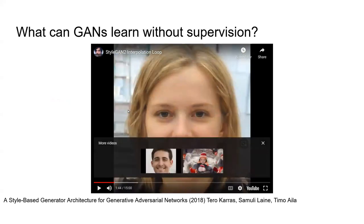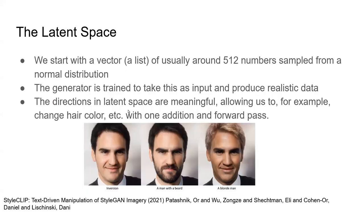You might have 512 numbers in a vector sampled from a normal distribution. You pick a point and make a face from it, pick another point, and as you move through that latent space the properties change in a meaningful way — which is really cool. As Adobe researchers have shown, the directions in latent space are meaningful. You can take a linear direction — just adding a list of numbers to the latent code — and say: take me from any random face and make it blonde. You can do that, which is really powerful because it's just one addition and one forward pass.